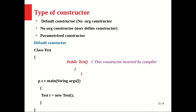The first is the default constructor. The default constructor is generated by the compiler — remember, it is generated by the compiler, not by the JVM. If we don't write any constructor in a class, then the compiler will generate its own constructor, which is called the default constructor, and it is a no-argument constructor.